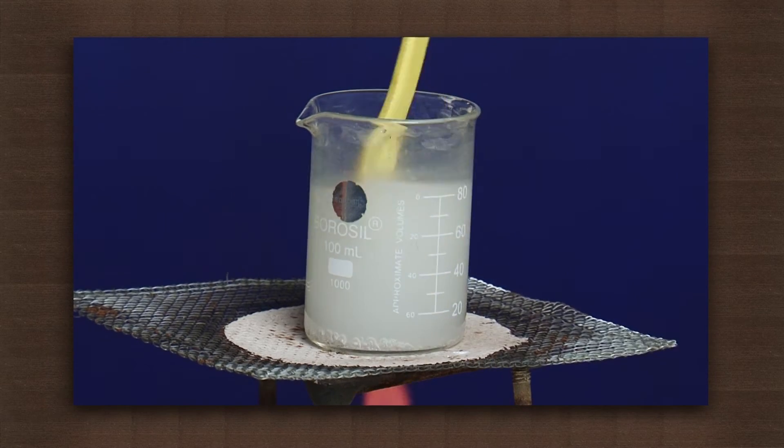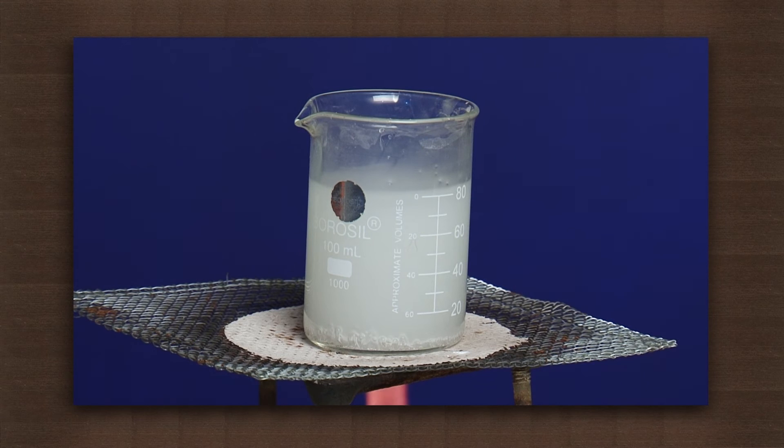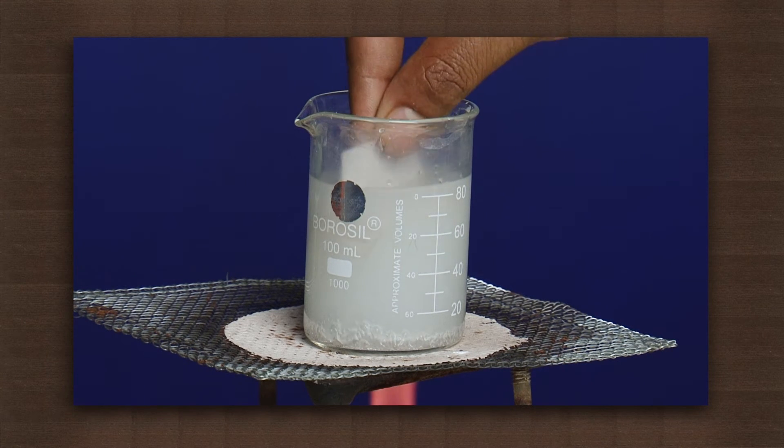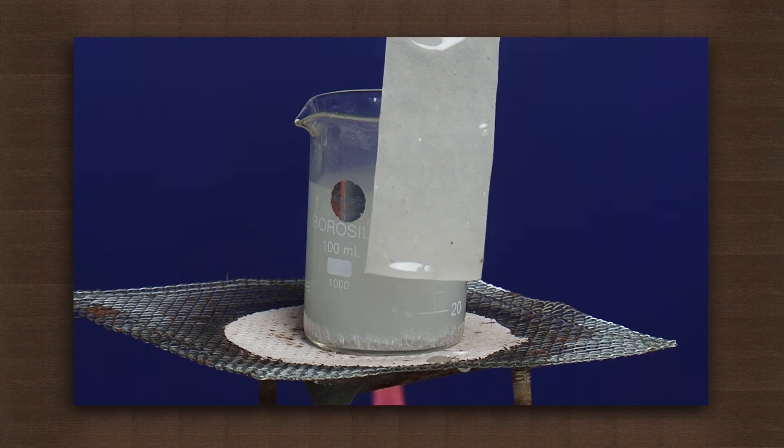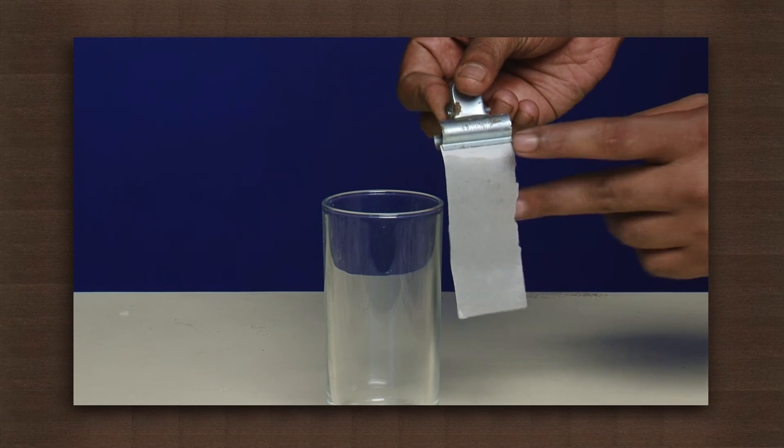Once it boils, dip the filter paper in the solution. Properly coat it with the starch iodide solution. Hang it on a paper clip and keep it to dry.